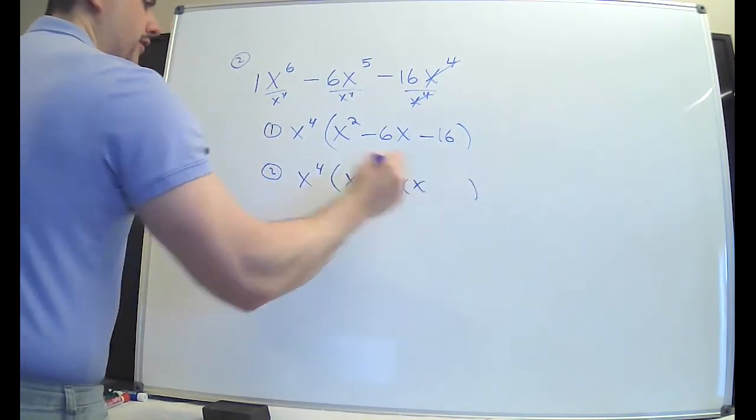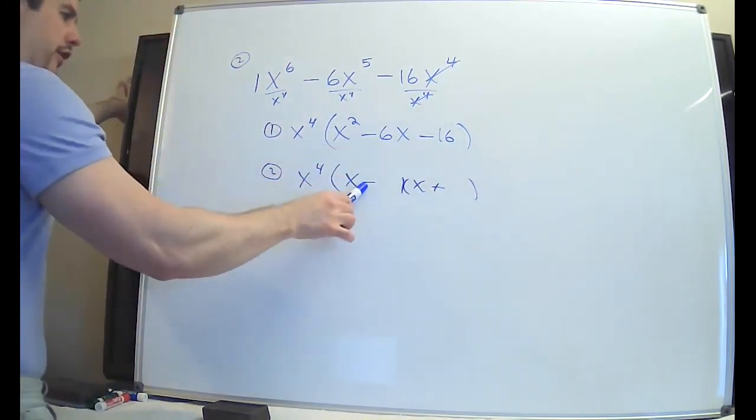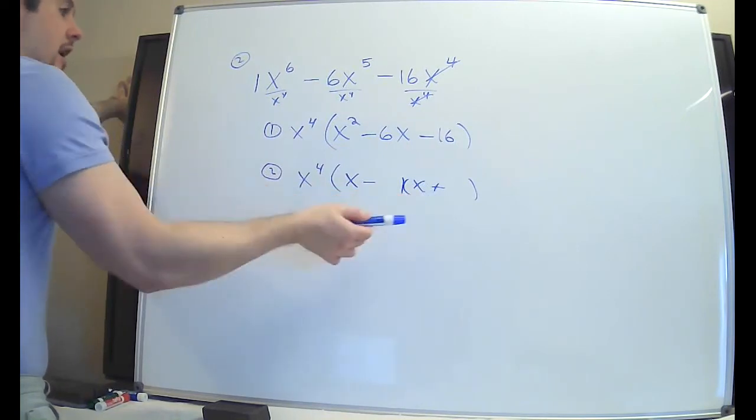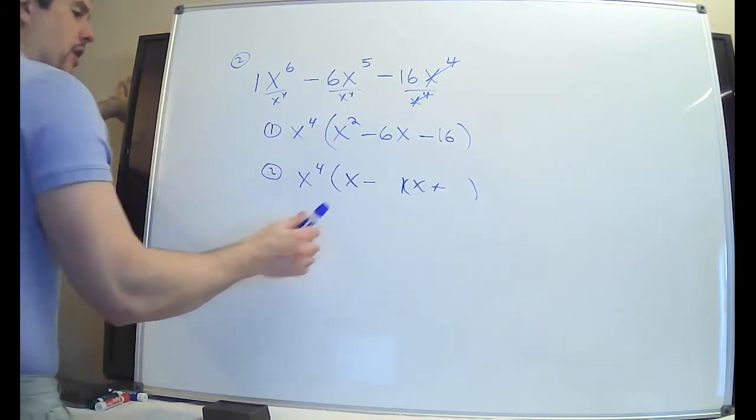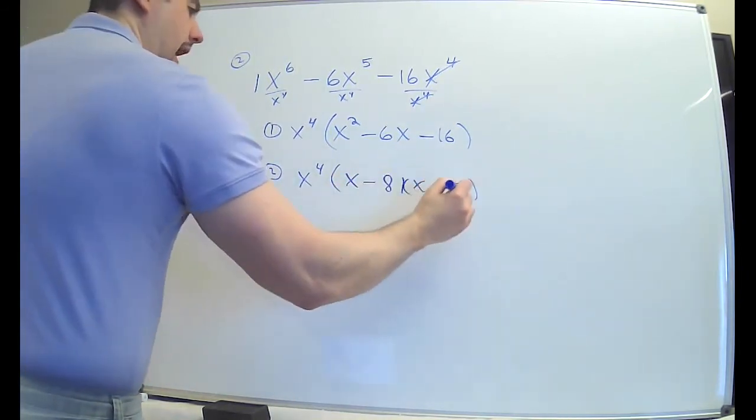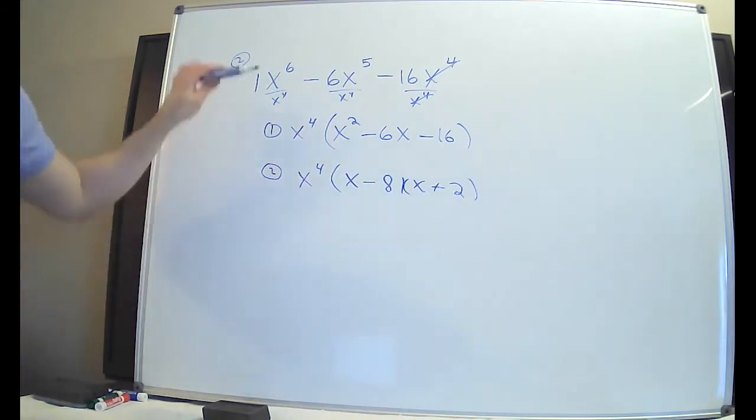You write your two parentheses. You do your signs, which in this case, are minus and plus. He goes first. He's opposite. The only numbers that are going to make a 6, you have 1 and 16, 2 and 8, or 4 and 4. It's going to be 8 and 2. You subtract that pair, you make a 6 in the middle. Okay, so again, GCF.